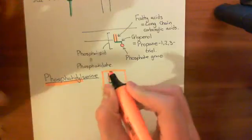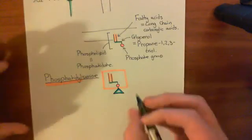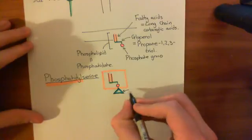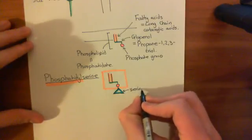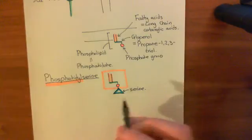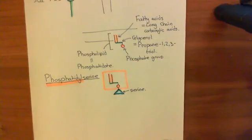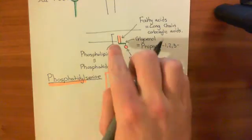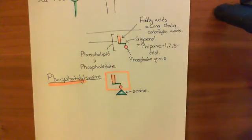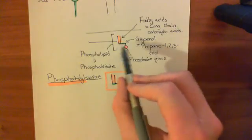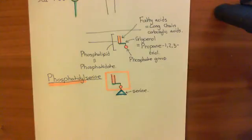So phosphatidylserine is just serine with a phosphatidyl group — a phosphatidate molecule — stuck off it. That's all 'phosphatidyl' means: a phosphatidate molecule stuck off something. You can put this molecule into the phospholipid bilayer next to normal phosphatidate, and it will function perfectly fine. Yes, it has a bigger head than a normal phospholipid, but it is indeed a normal component of the phospholipid bilayer.